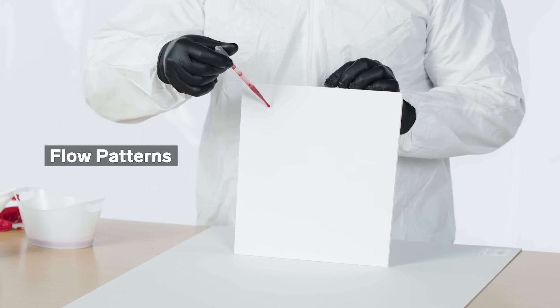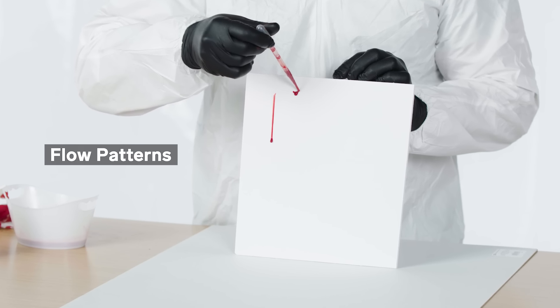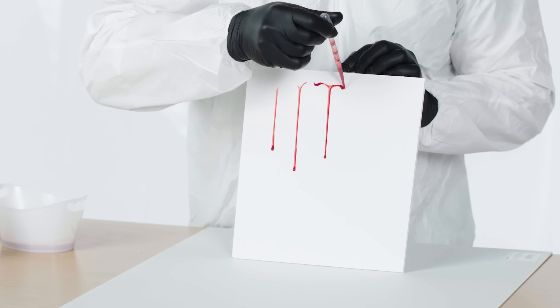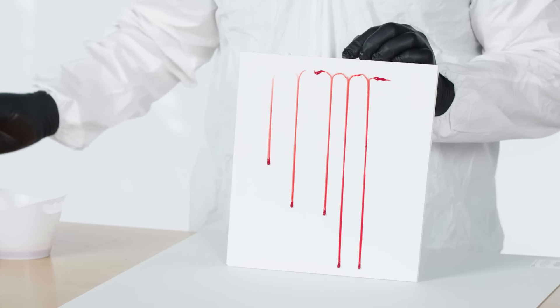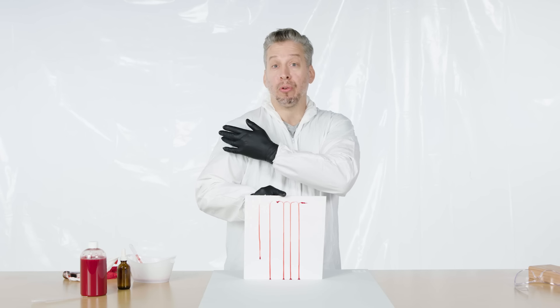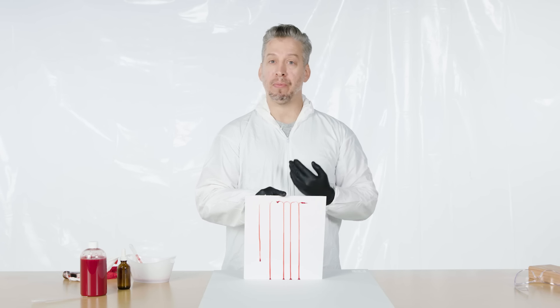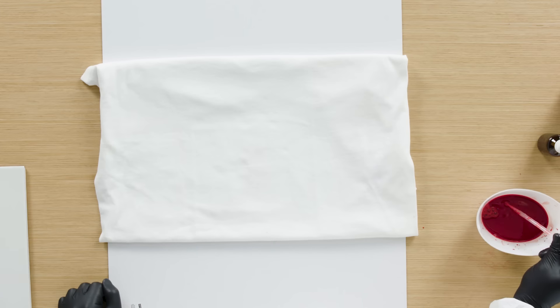Next we're going to cover flow patterns — the volume of blood being affected by gravity. We can see that gravity is pulling upon that blood and pulling it down on our surface. At crime scenes this may be very valuable evidence when we observe our victim's injuries. If a person had an injury to their shoulder and they're standing or their body is erect, that flow pattern should go straight down their arm. But if they've been moved, or that injury was caused when they were laying down, we'd see a different flow pattern.